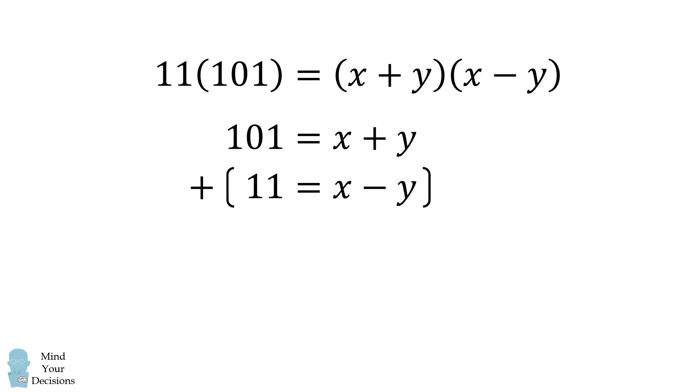We can then add these two equations together to cancel out the y terms. We then get 112 is equal to 2x, which means 56 is equal to x. We can then look at this equation and see that x minus y is equal to 11, which means y is equal to 45.